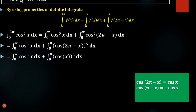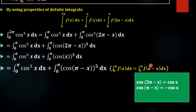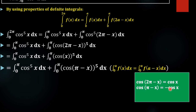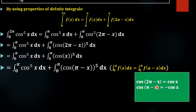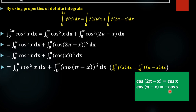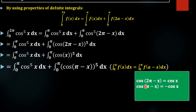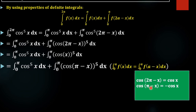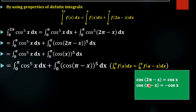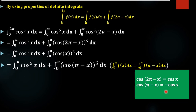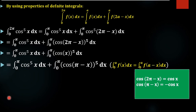We are again using the property of definite integral: integral 0 to a of f(x) dx equals integral 0 to a of f(a − x) dx. So instead of x, we substitute π − x. Now, what is cos(π − x)? The angle π − x is in the second quadrant, where only the sine term is positive. Since this is an odd multiple of π, not an odd multiple of π/2, we don't change the function name — so cos(π − x) = −cos x.